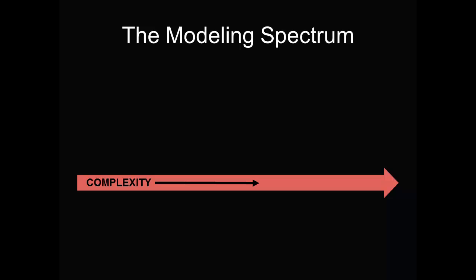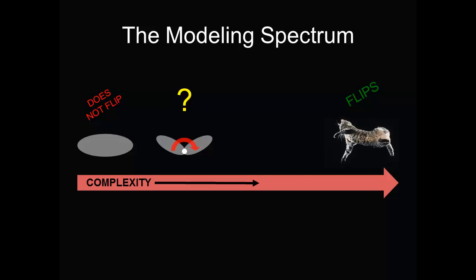To answer this question, we work our way up in complexity along the modeling spectrum. We know this won't flip. We know a real cat flips. But what about two bodies pinned together? What about more complex models? We will continue to add degrees of freedom to the base case until we get a flip in feline.